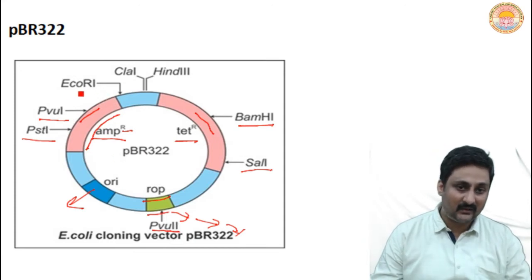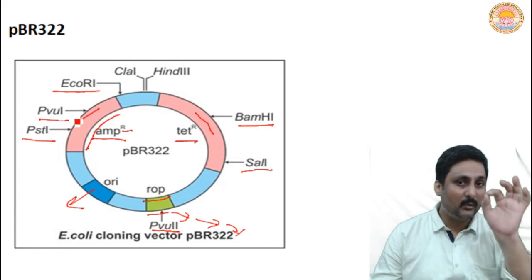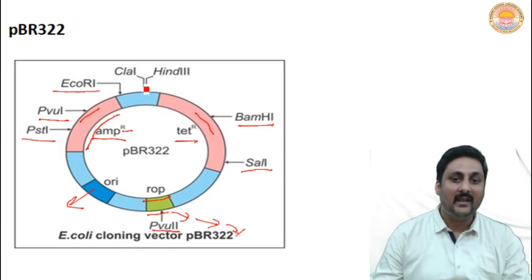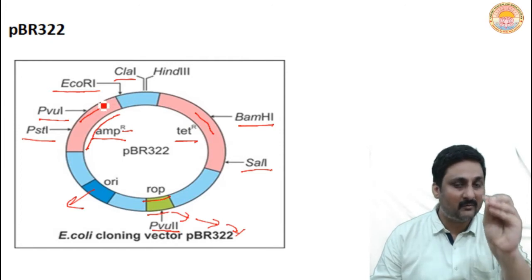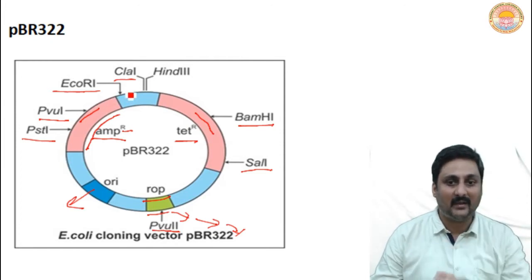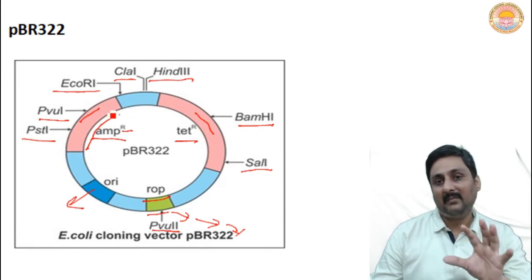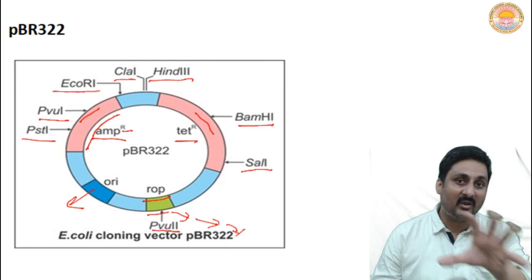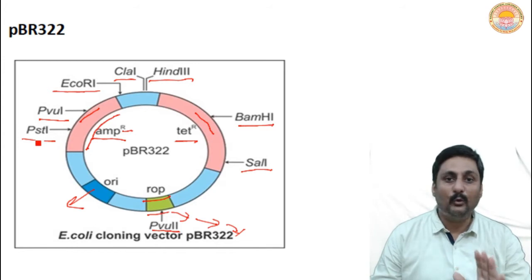There are three different restriction endonuclease enzymes you can see here. EcoRI recognizes a particular sequence in the upper region and causes the vector to open. Similarly, CLA1 also recognizes a particular region and opens it. The third one does the same work. In summary, pBR322 is an artificial, constructed vector — it has been constructed just for the purpose of cloning.